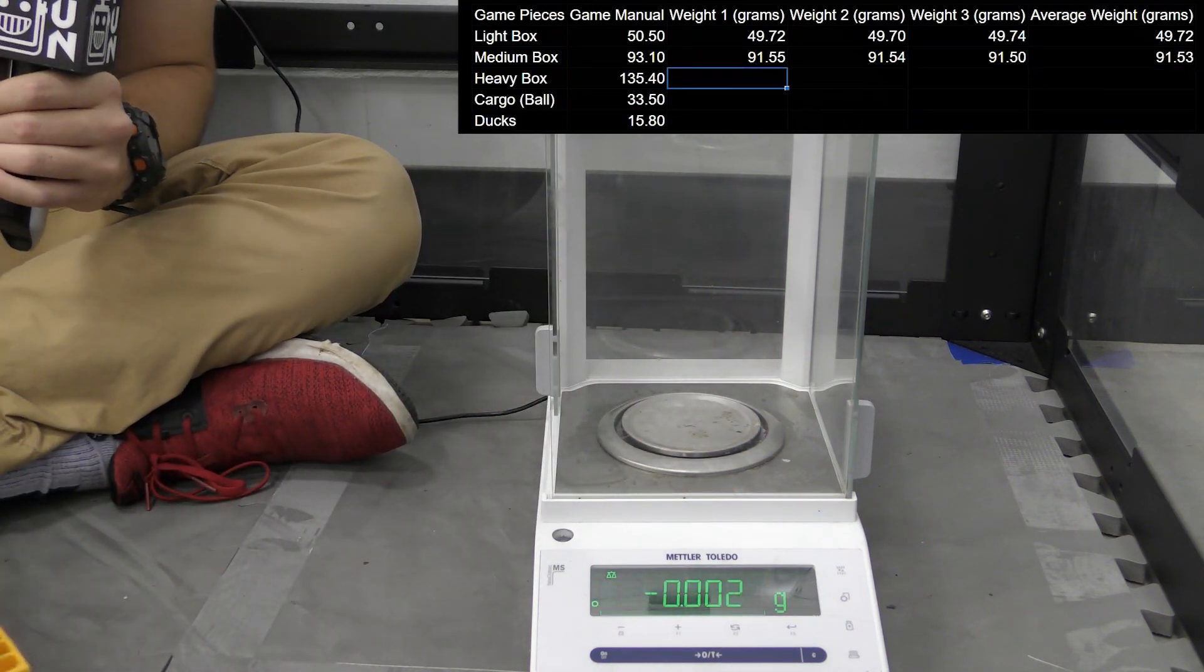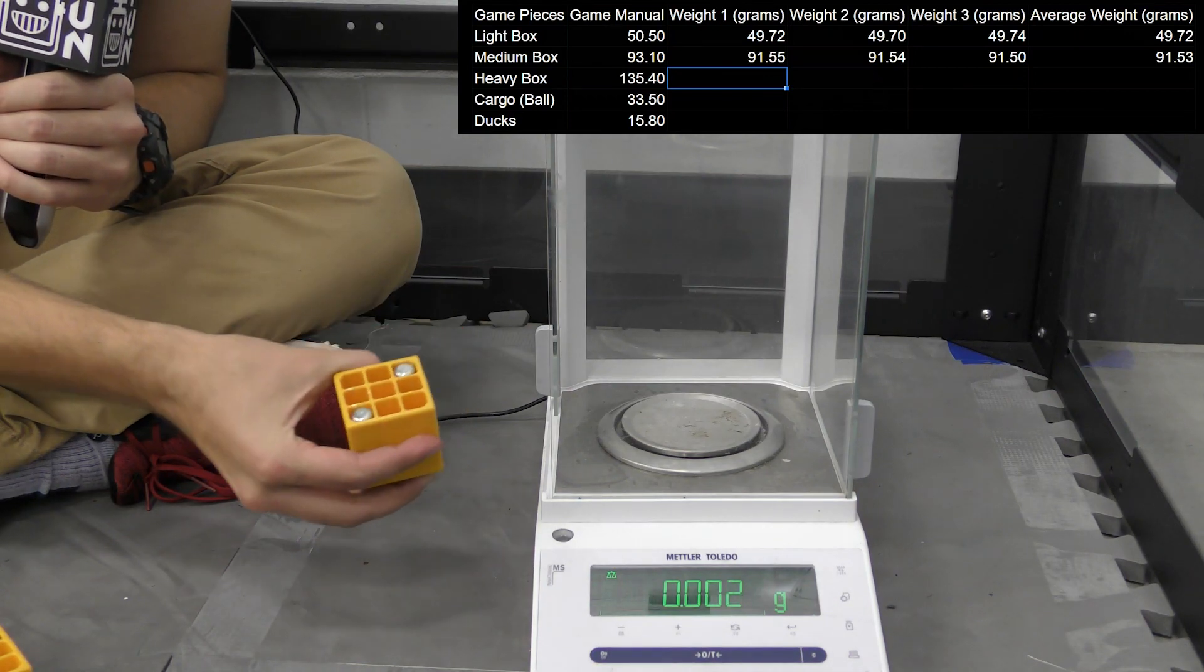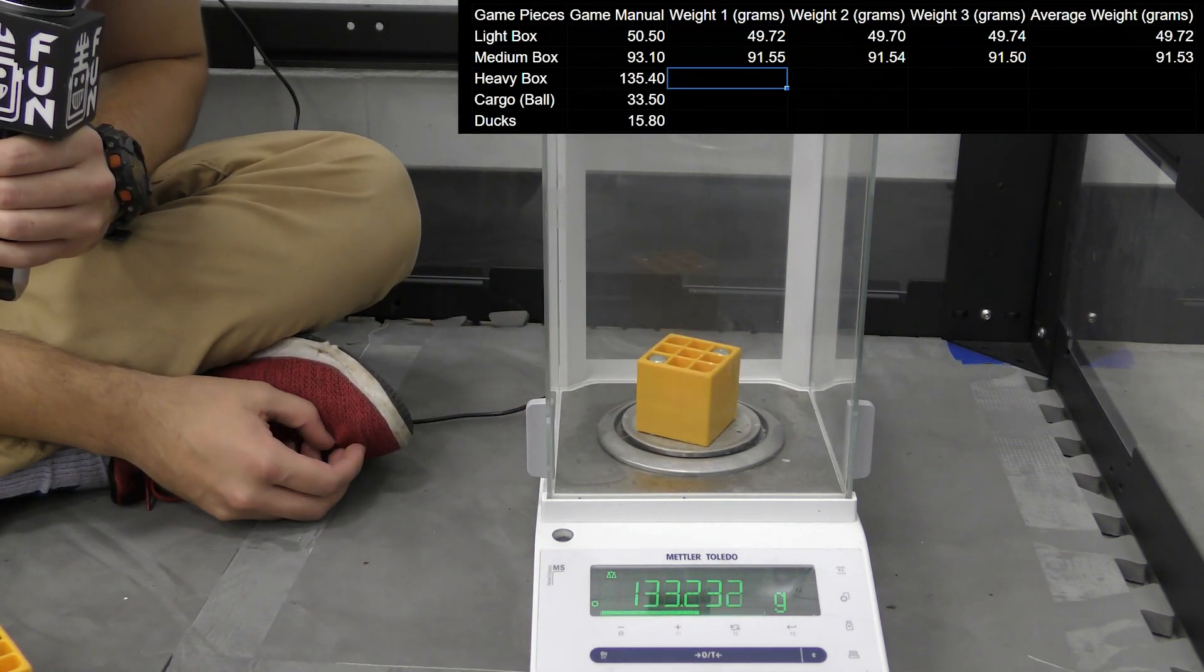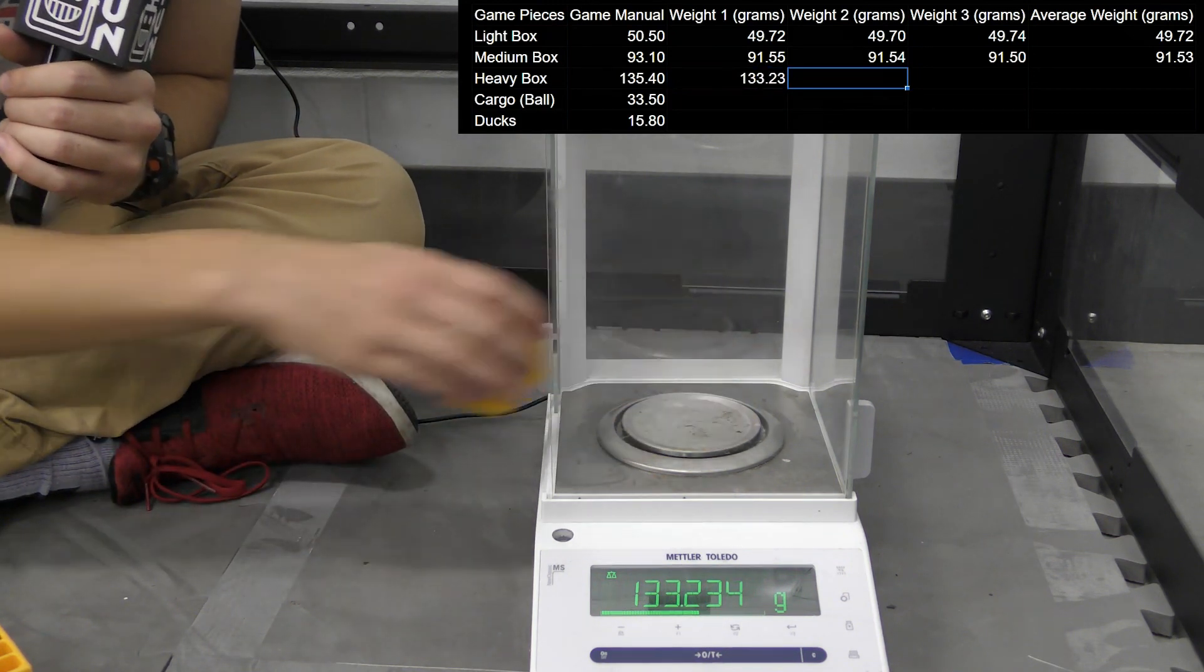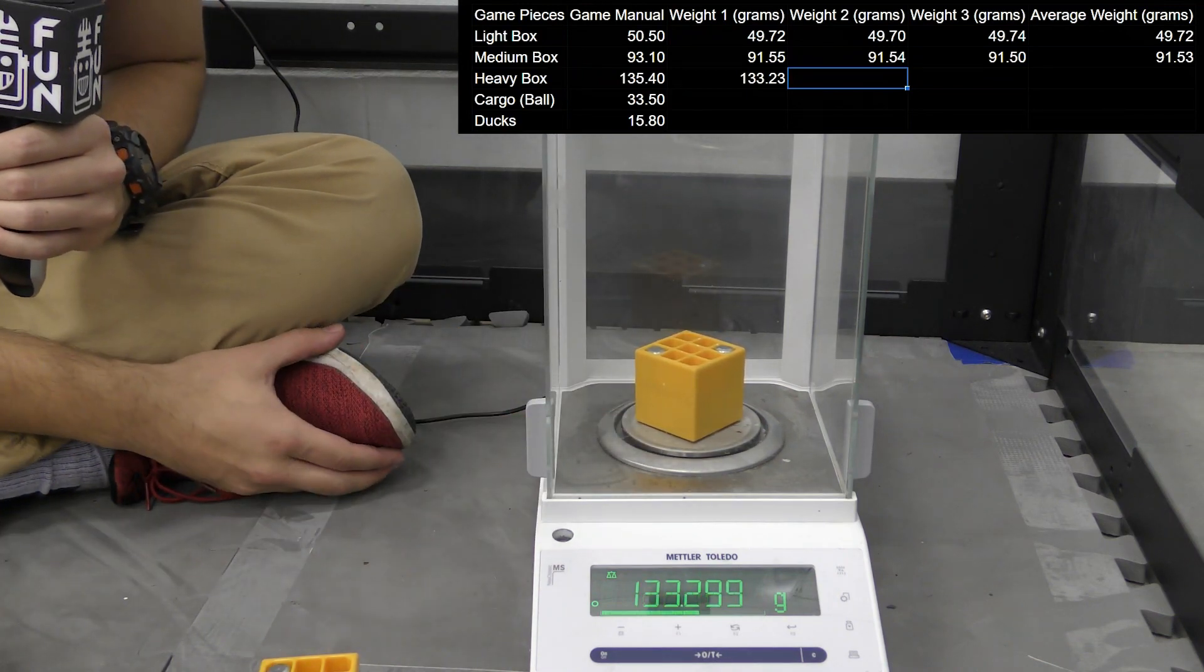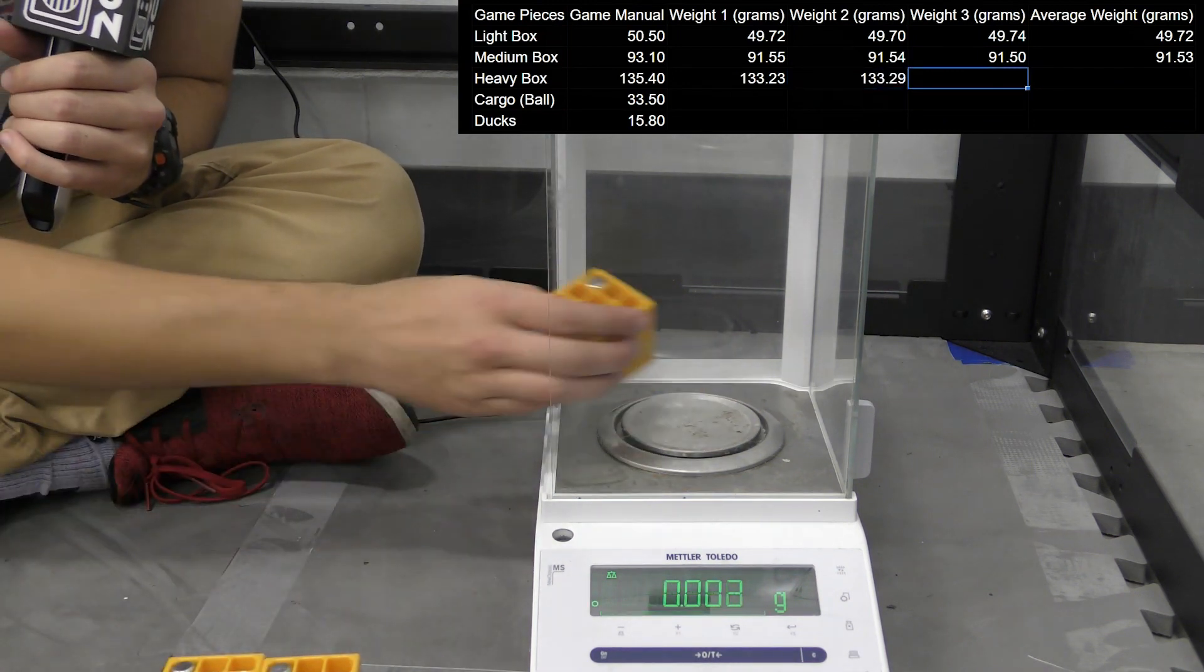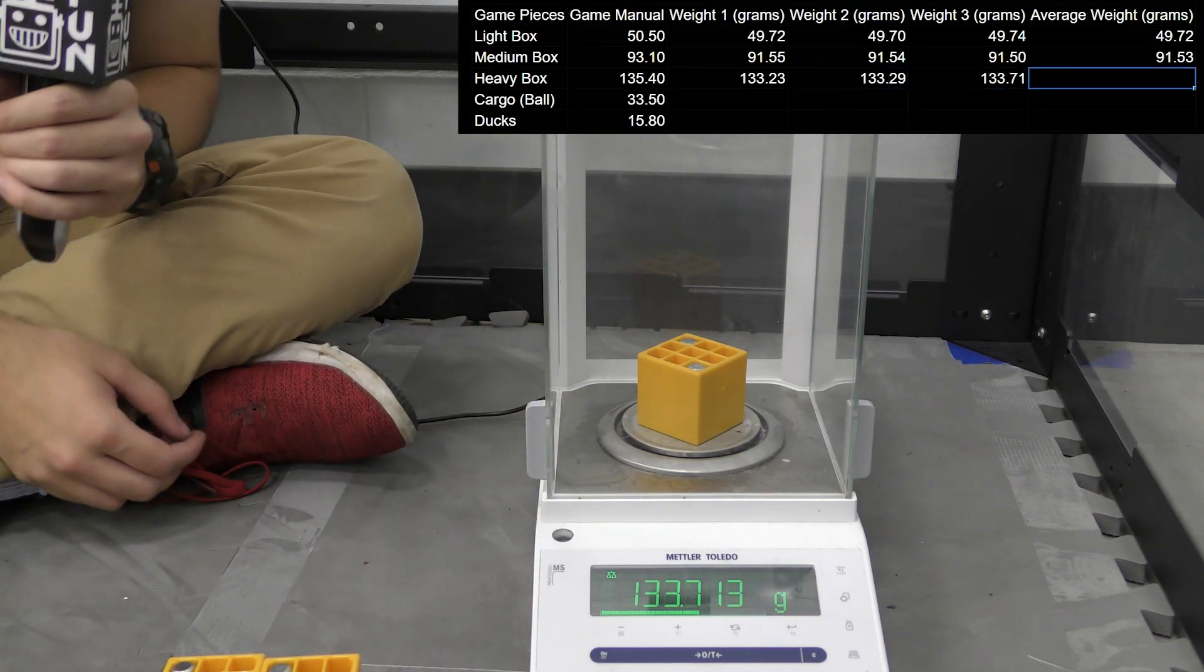So then we have the heavy ones. So these have two weights on both sides of the cube, so four weights total. With that one we have 133.23 grams. 133.29 grams. And then 133.71 grams.